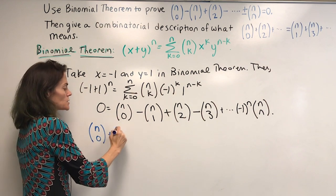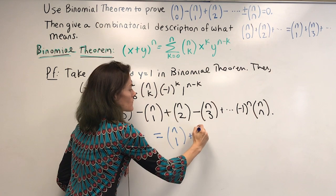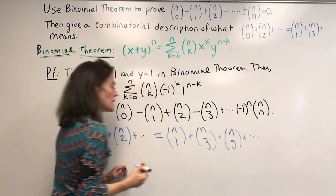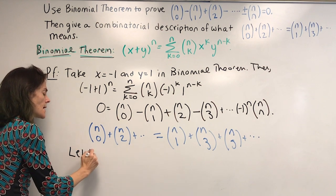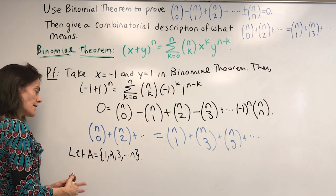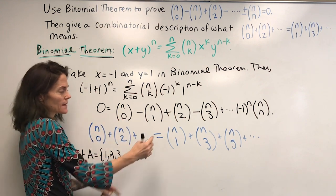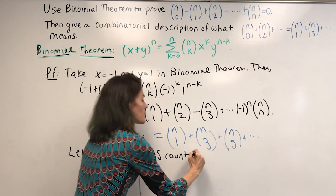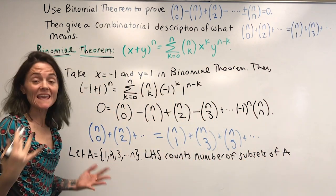Looking at this: n choose 0 plus n choose 2 plus... I move everything with odd k over to the right side — those are the terms with negatives in front. Let A be the set 1, 2, 3, to n. Then the left-hand side — n choose 0 plus n choose 2 plus n choose 4, etc. — is the number of zero-element subsets, two-element subsets, four-element subsets of A. So the left-hand side counts the number of subsets of A with even cardinality.